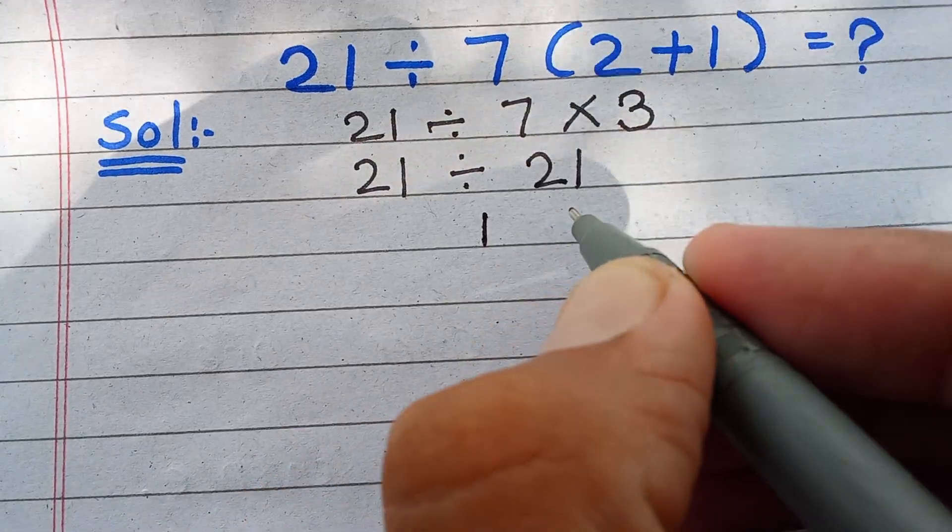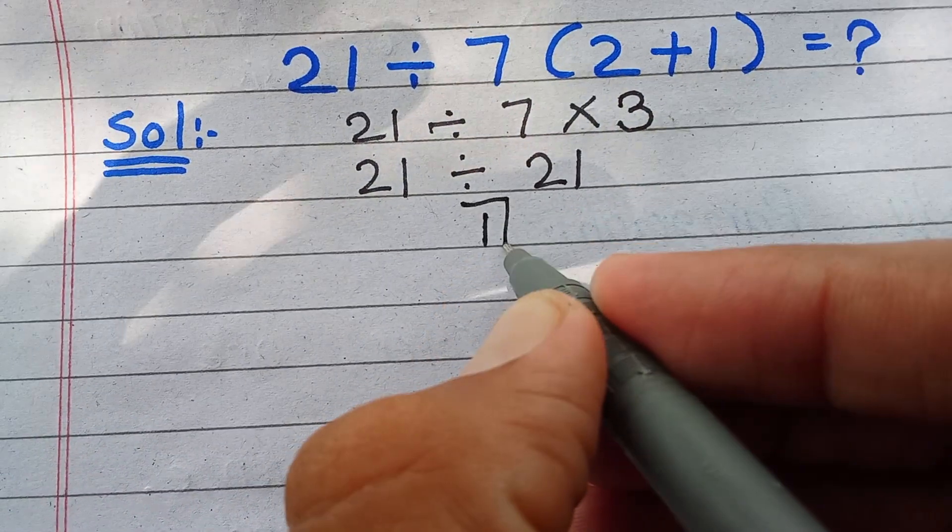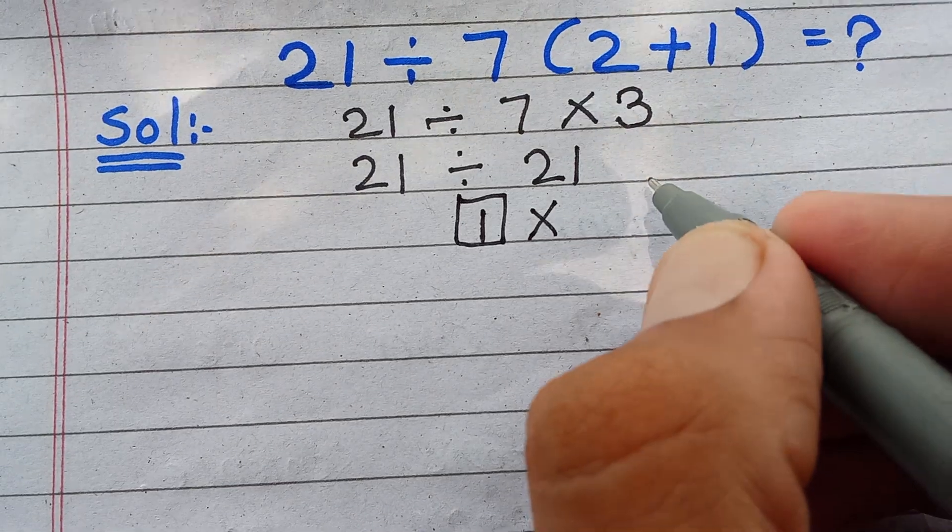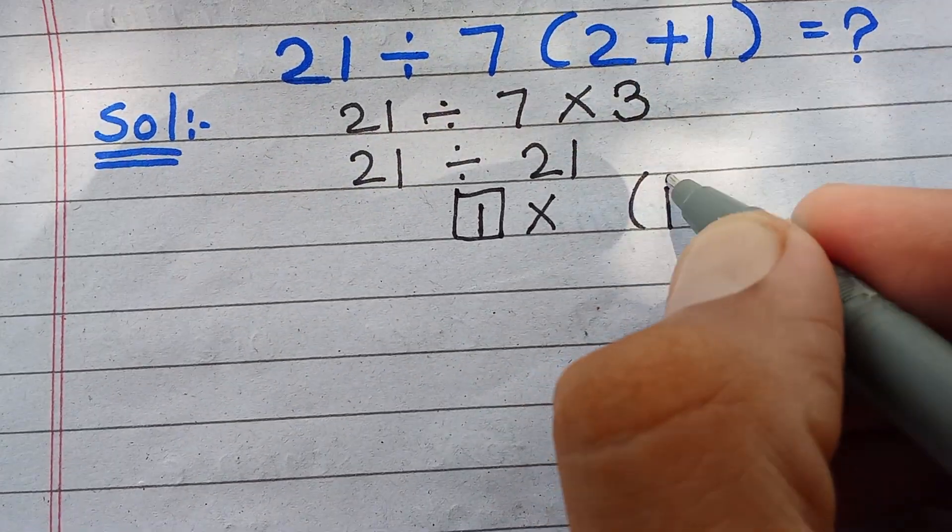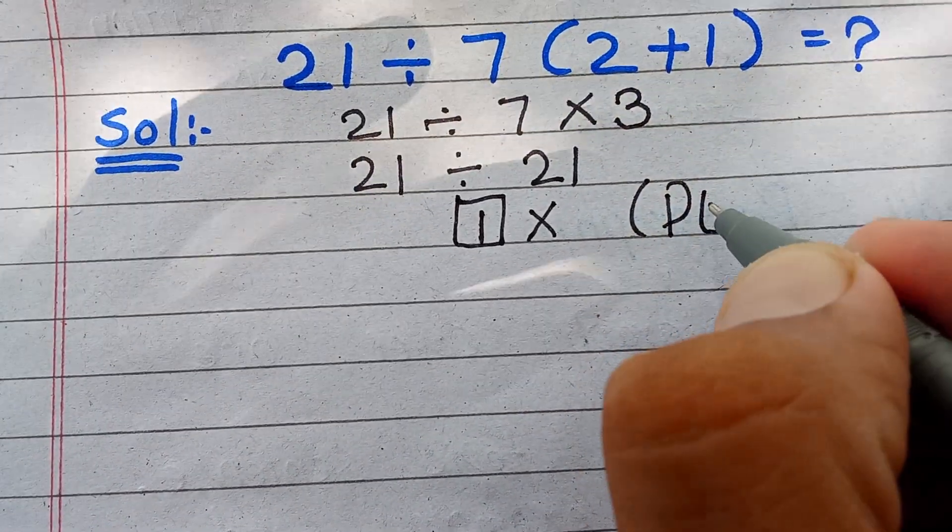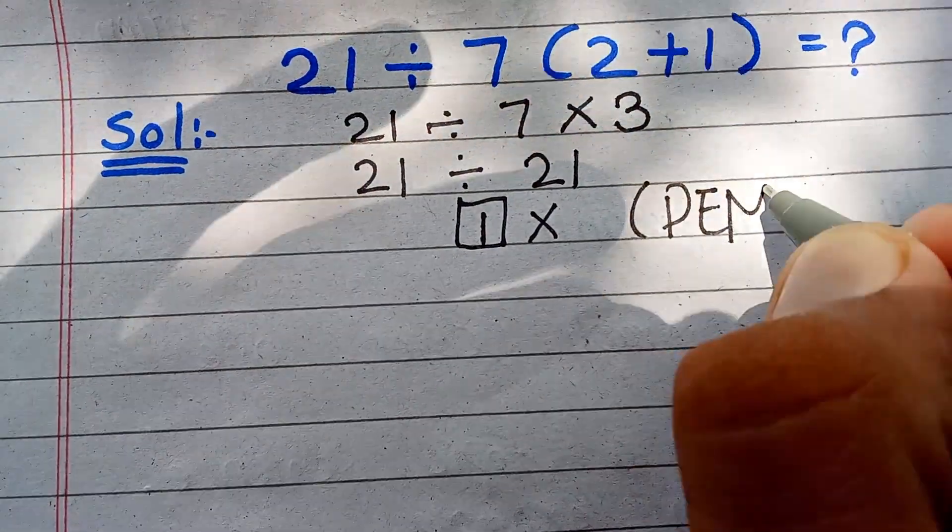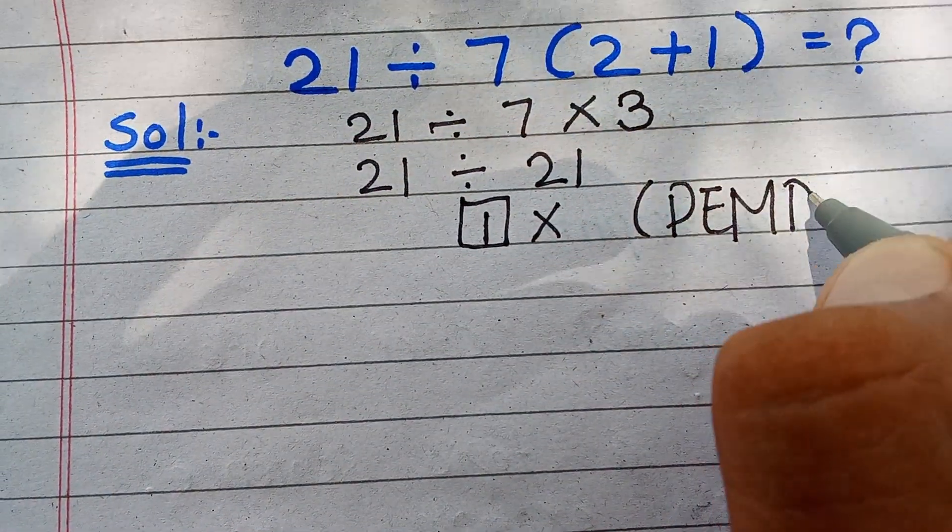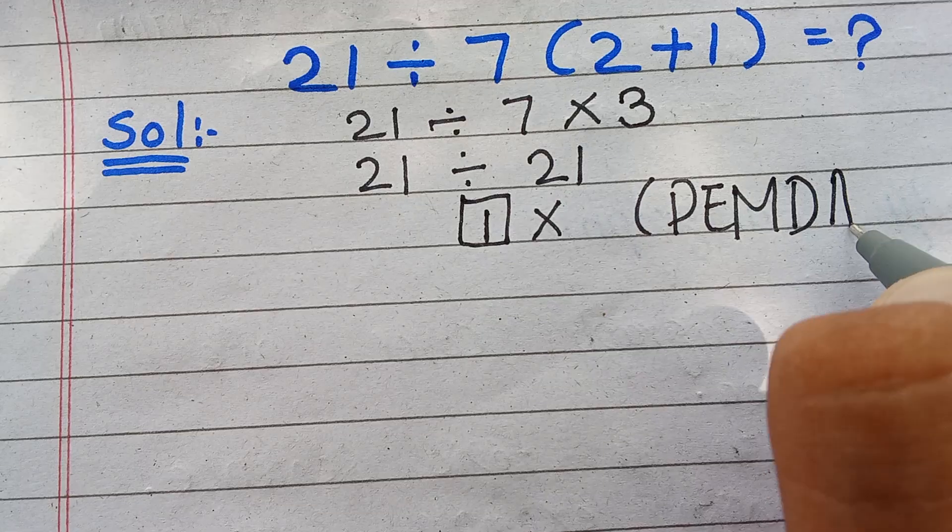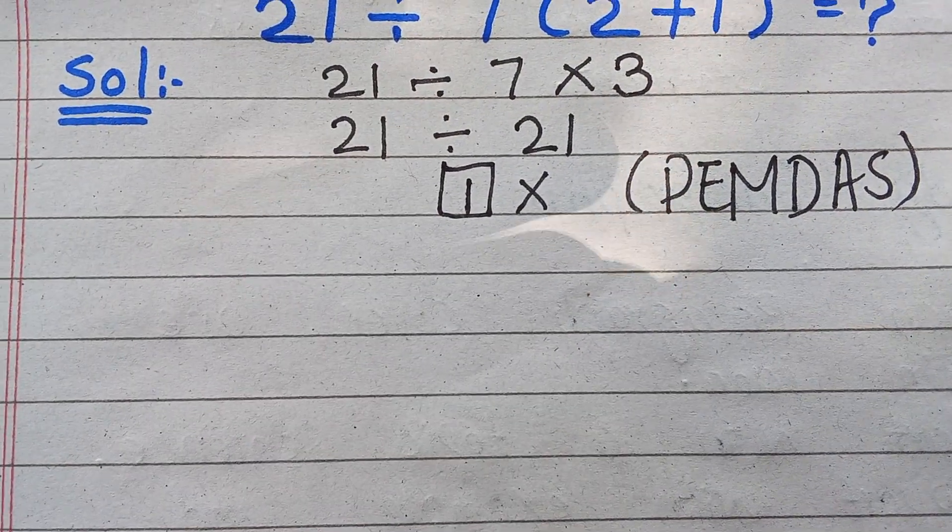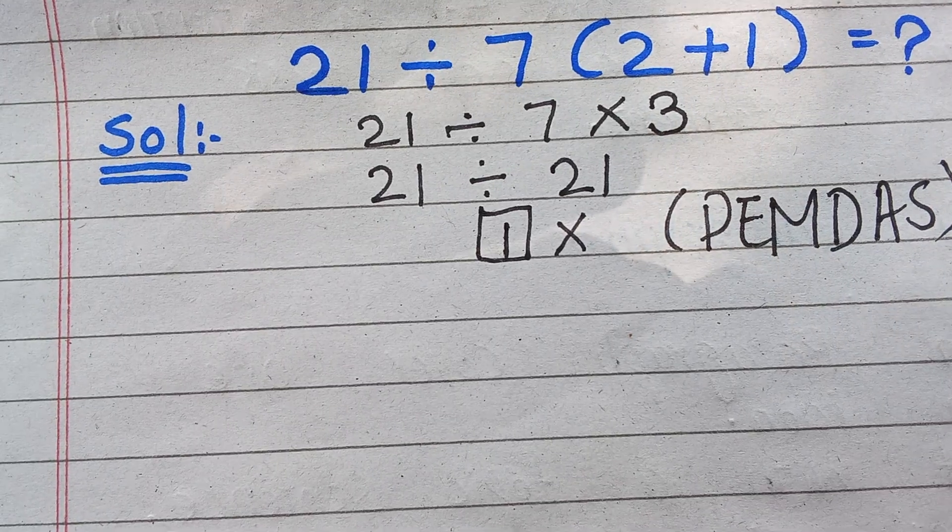But students, this answer is wrong because of the order of operations, which is PEMDAS. P stands for parenthesis, E stands for exponent, M multiplication, D division, A addition, and S subtraction. In PEMDAS, multiplication and division have equal priority.